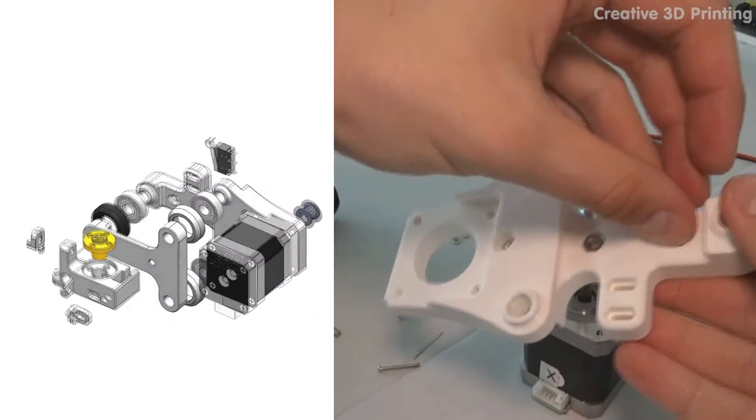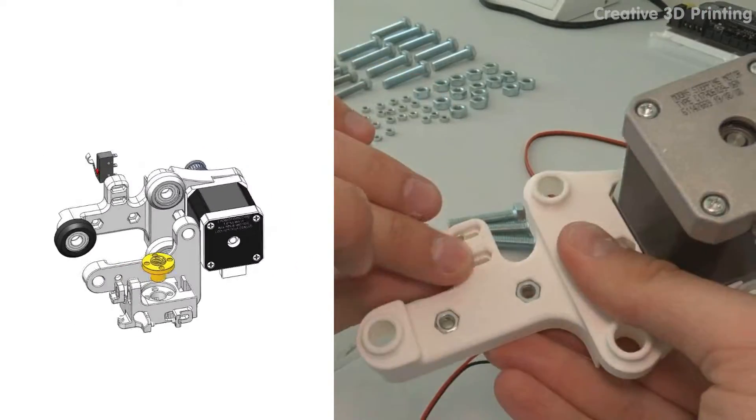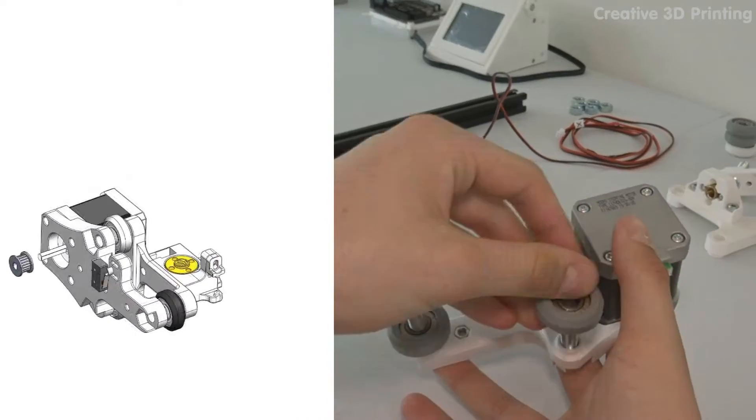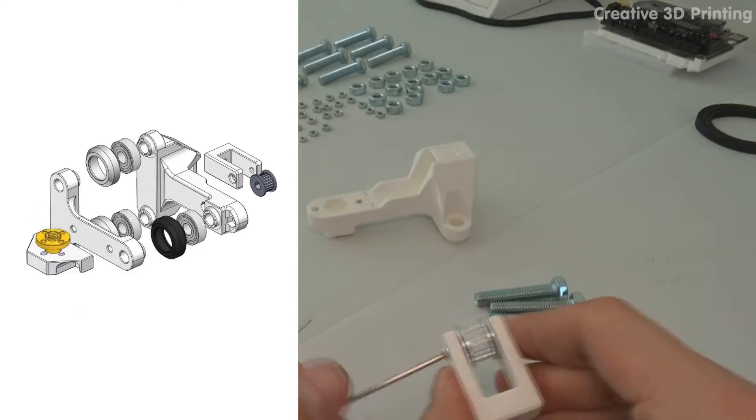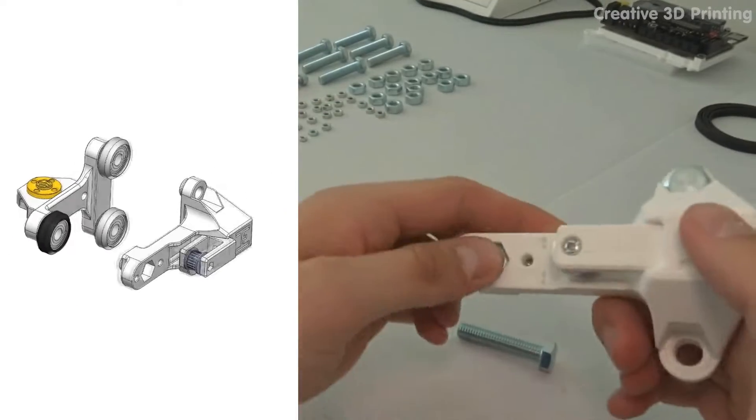Now I assemble the left Z carriage containing the X stepper motor and X limit switch. Then I make the right Z carriage containing the belt tensioner for the X axis.